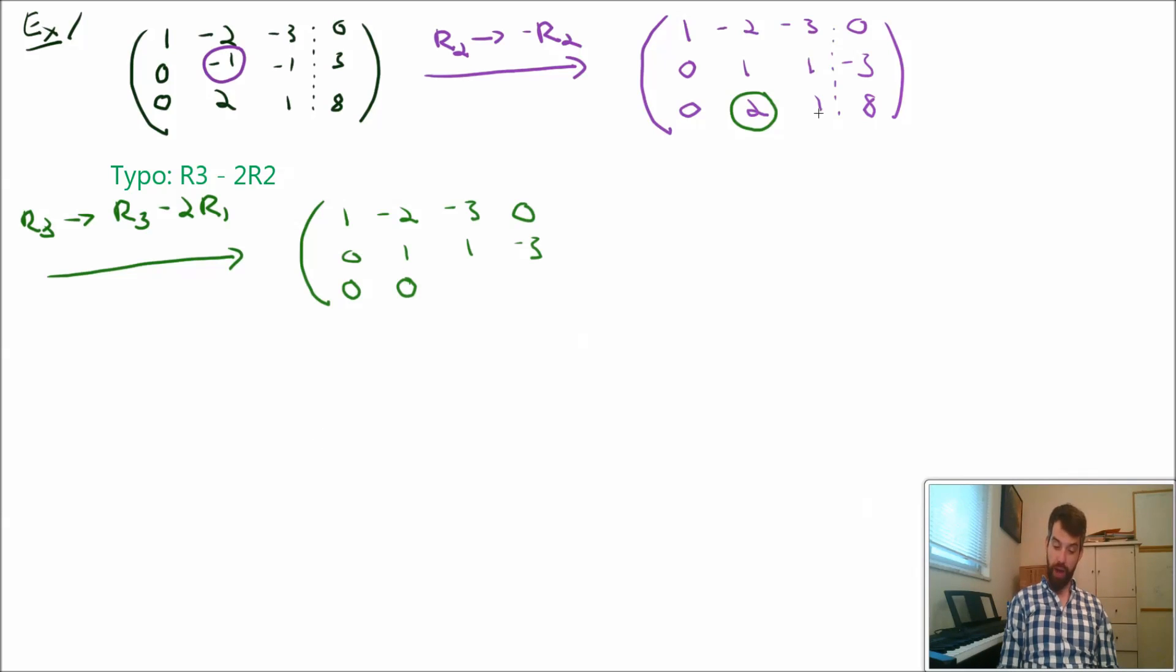Then, one minus twice one, that puts a minus one here. And finally, eight minus twice of minus three, that's like a minus six. And since I'm subtracting a minus six, it's like adding six. So eight plus six is fourteen.